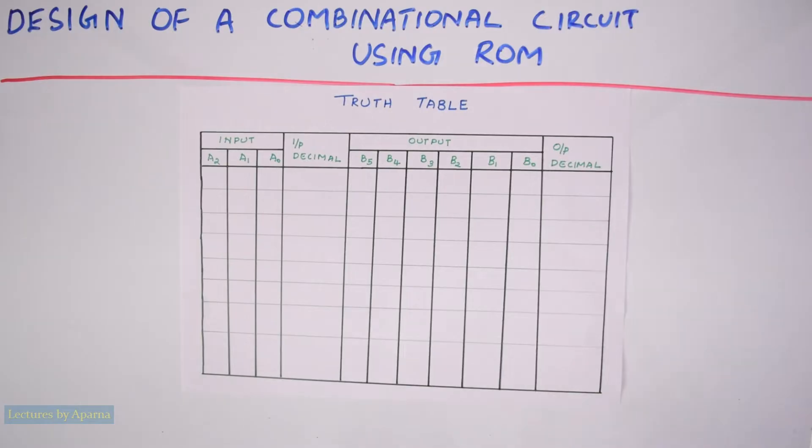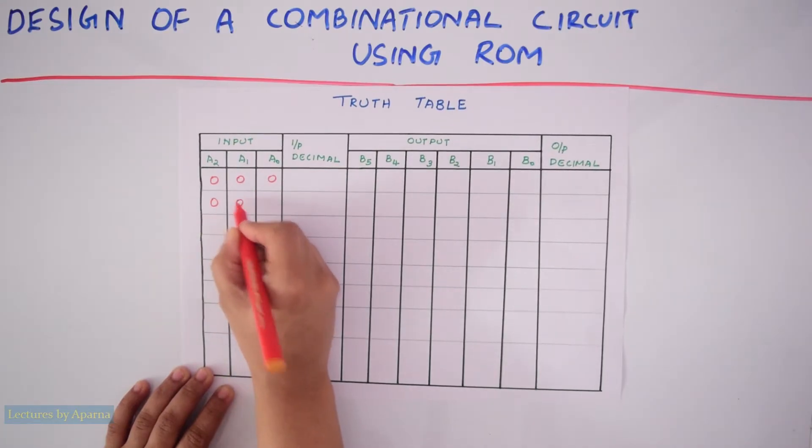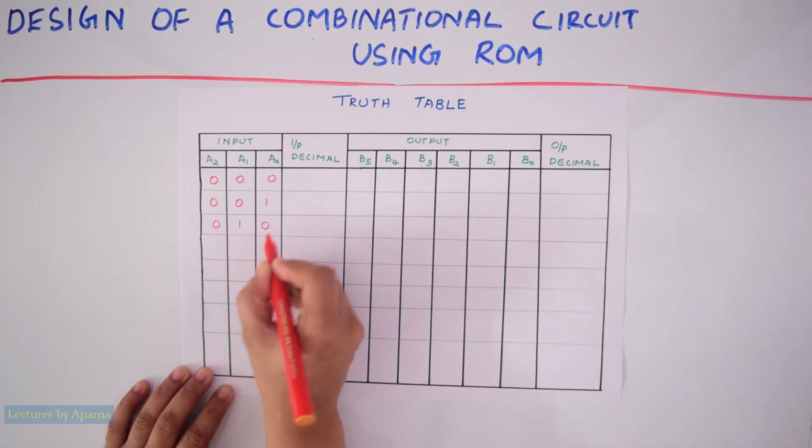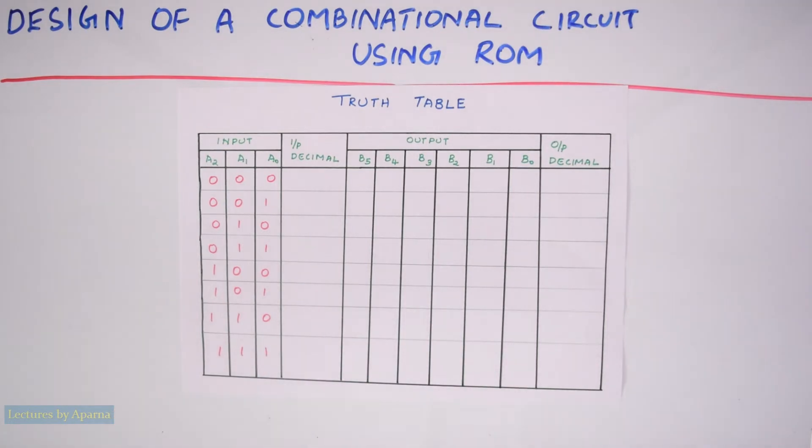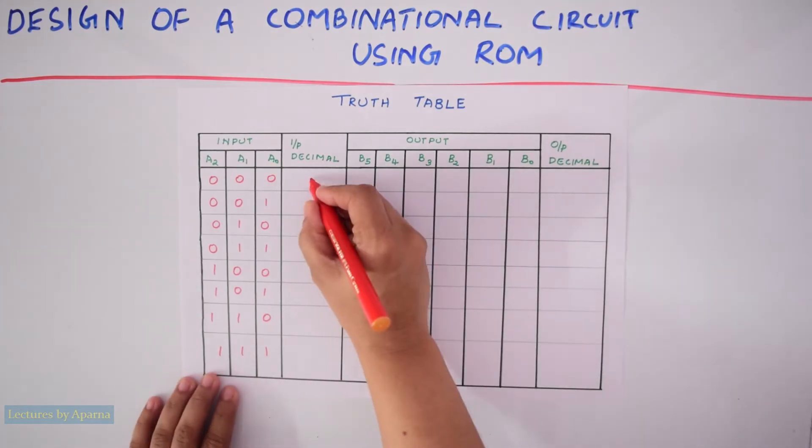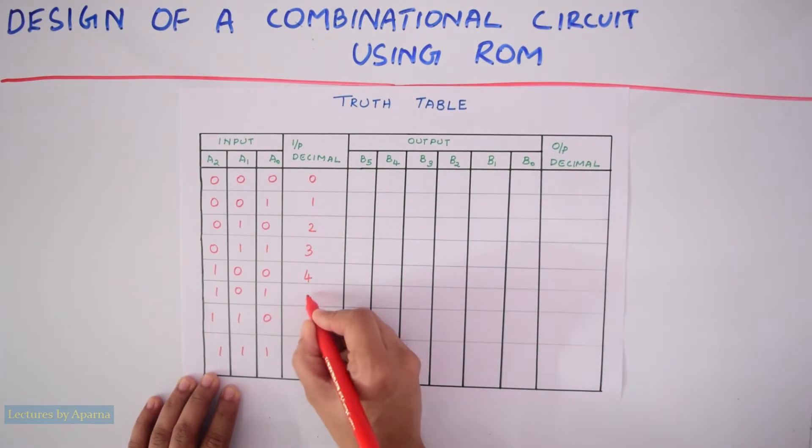First, I will fill all the input 3-bit numbers. So it will be 000, 001, 010, 011, 100, 101, 110, and 111. Now I have to write the decimal equivalent of these numbers. It will be 0, 1, 2, 3, 4, 5, 6, and 7.